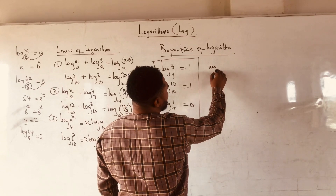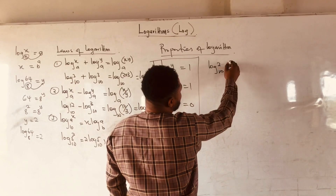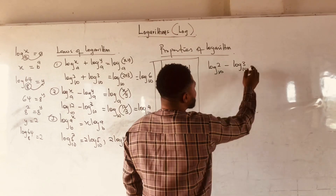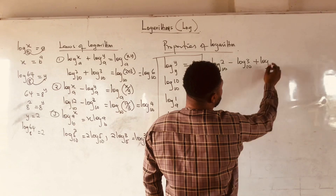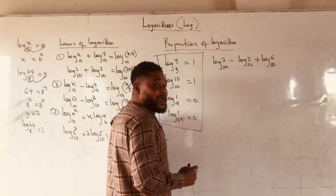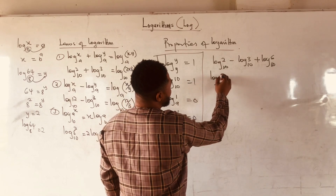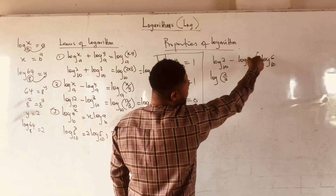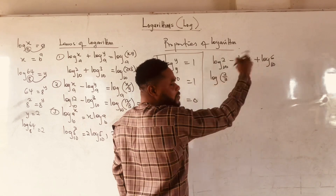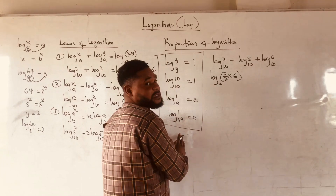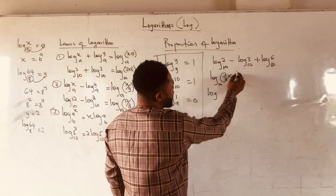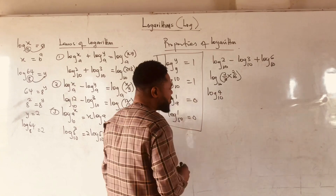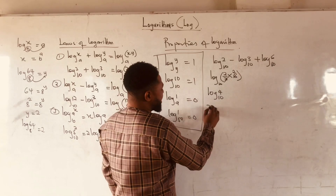Now let us see how we can combine the laws and properties to simplify a question like: log 2 base 10 minus log 3 base 10 plus log 6 base 10. You can go straight and say log — this and this are subtracting, so you divide: 2 divided by 3; and the last term is adding, so you multiply by 6. Then 3 goes into 6 giving 2, and 2 times 2 gives 4. So we are going to have log 4 base 10.